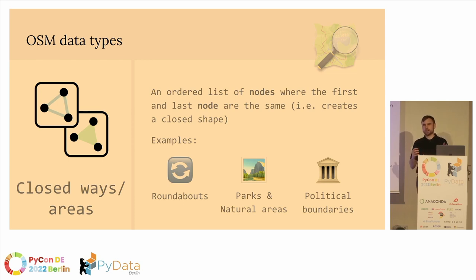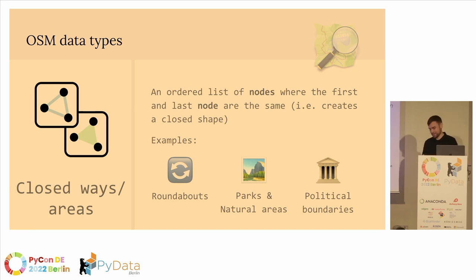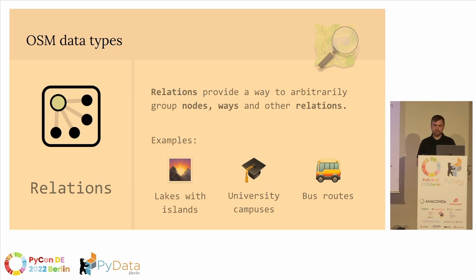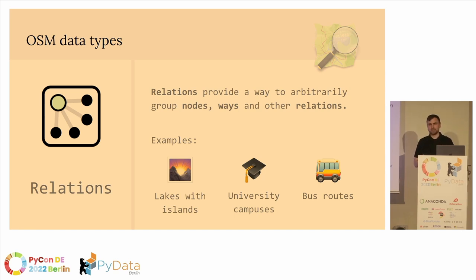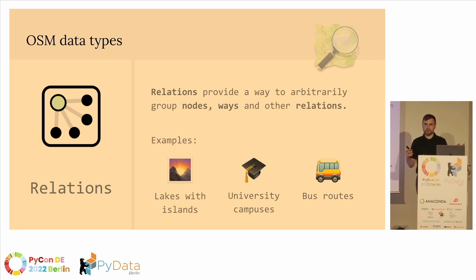This is a good point to mention that OpenStreetMap is actually the largest database in the entire world of building footprints — pretty cool. Finally, we have what's known as a relation. Relations provide a way to arbitrarily nest and relate the first two types of data to each other. With relations, you can group nodes and ways together. Interesting use cases include any polygon with a hole — like a lake with an island or a building footprint with a courtyard — university campuses consisting of multiple buildings, and bus routes, which are open ways grouped together to express a single thing.